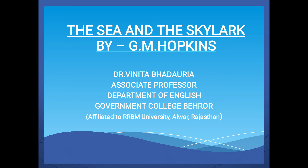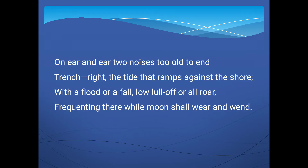In the previous video on G.M. Hopkins and The Sea and the Skylark, I gave a brief introduction of Gerard Manley Hopkins and the poem. It is written in the form of a sonnet with iambic pentameter. It is a 14-line poem and he adopts the sonnet pattern of Italian writer Petrarch, who is the father of the sonnet. In this video, I am going to explain the poem. The poem consists of one octave and one sestet. The octave is 8 lines divided into 2 quatrains, and the last 6 lines are the sestet divided into 2 tercets of 3 lines each.